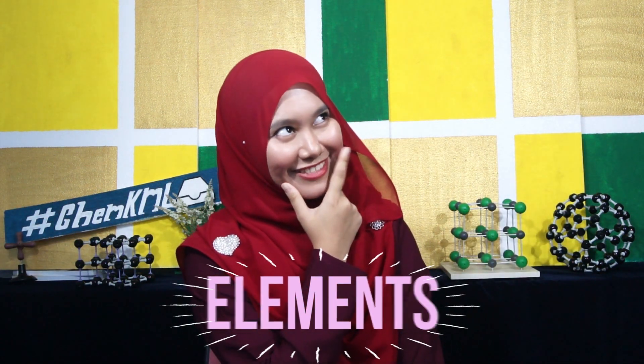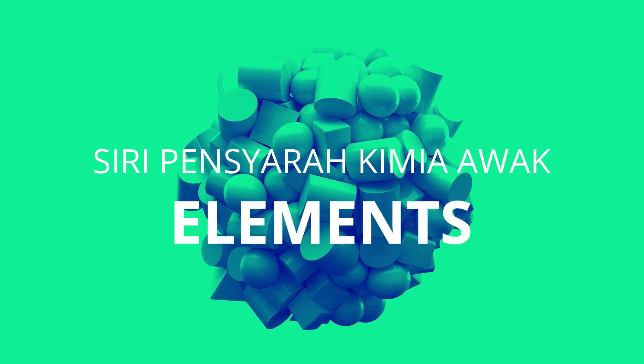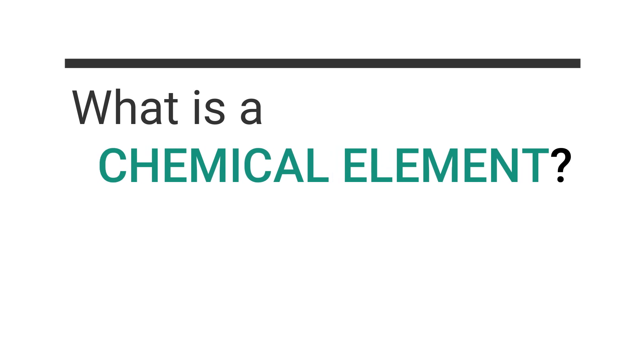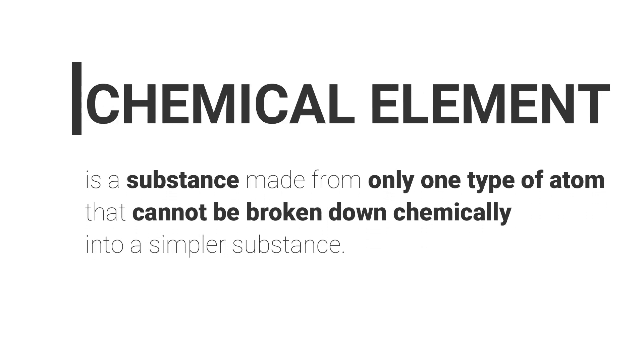What is an element? A chemical element is a pure substance that cannot be broken down chemically into a simpler substance, and consists of only one type of atom.